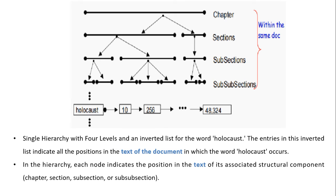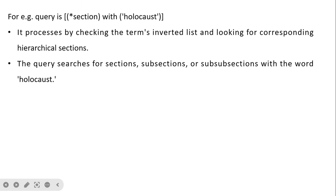This is an example of a single hierarchy with four levels and an inverted list for the word 'holocaust'. All unique words or vocabulary are maintained, but for simplicity only one word is shown. The entries in this inverted list indicate all positions in the document where the word 'holocaust' occurs. In the hierarchy, each node indicates the position of its associated structural component. For a simple query — 'select from section with the word holocaust' — the system checks the terms in the inverted list, then looks for the corresponding hierarchical section.